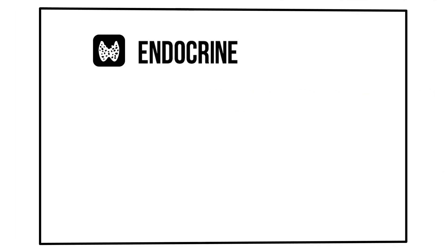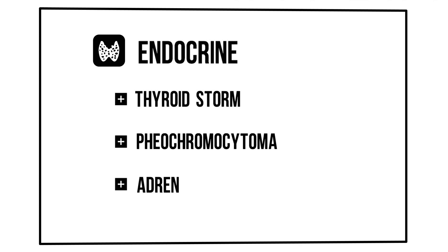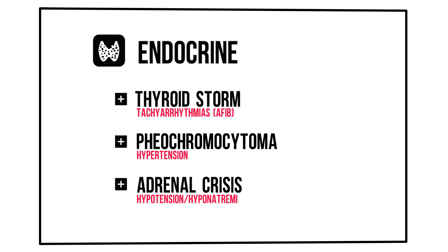Endocrine disorders that cause hyperthermia are rare, and they don't necessarily cause hyperthermia either. Examples are thyrotoxicosis — also known as thyroid storm — pheochromocytoma, and Addison's. Other symptoms will help you in figuring out these diagnoses: tachyarrhythmias like atrial fibrillation in thyroid storm, severe hypertension in pheochromocytoma attacks, and the triad of hypotension, hyponatremia, and hyperkalemia in Addison's, to name a few.